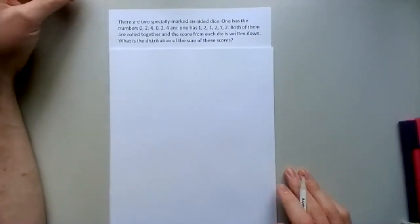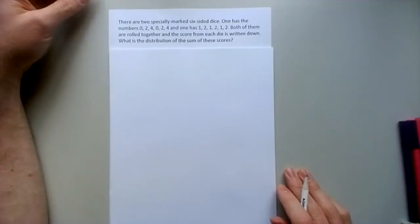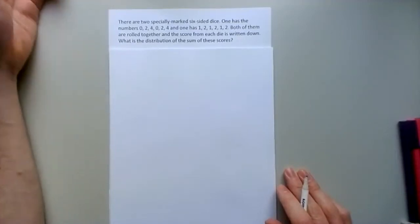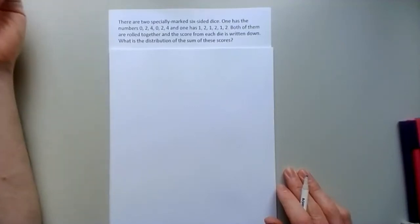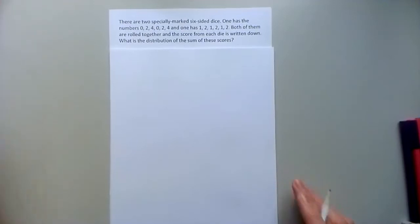There are two specially marked six-sided dice. One has the numbers 0, 2, 4, 0, 2, 4 and one has 1, 2, 1, 2, 1, 2. Both of them are rolled together and the score from each die is written down. What is the distribution of the sum of these scores?